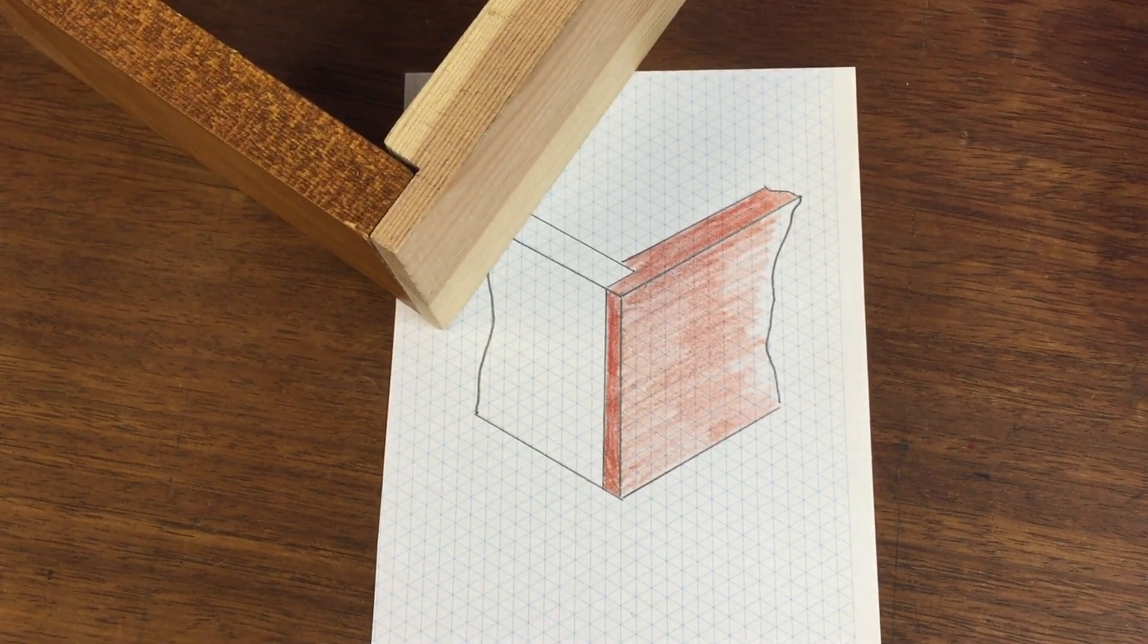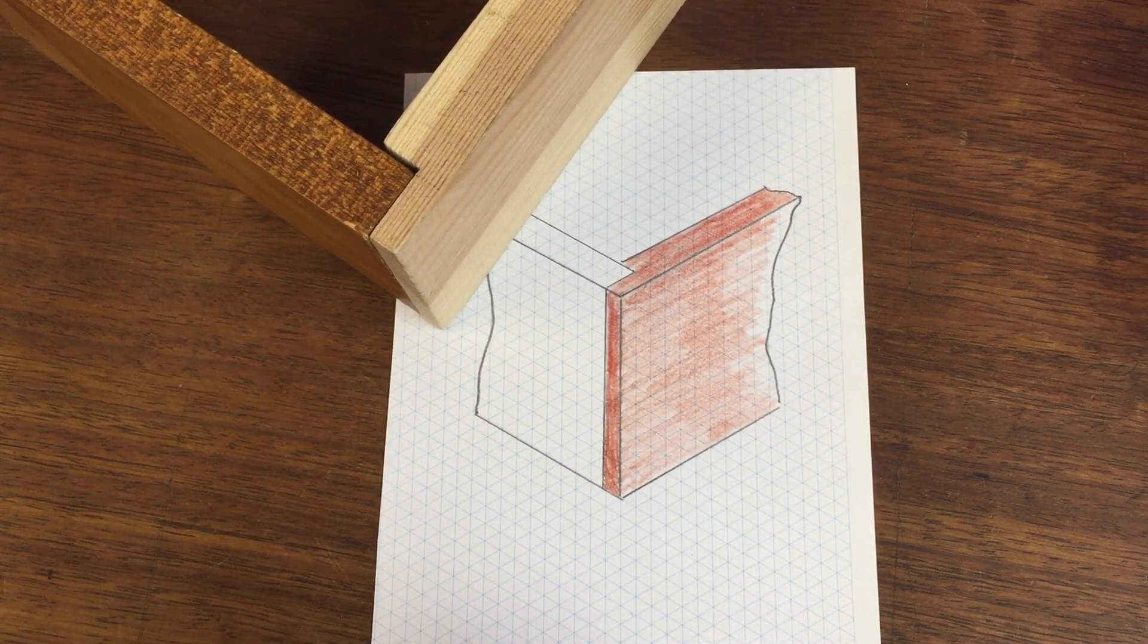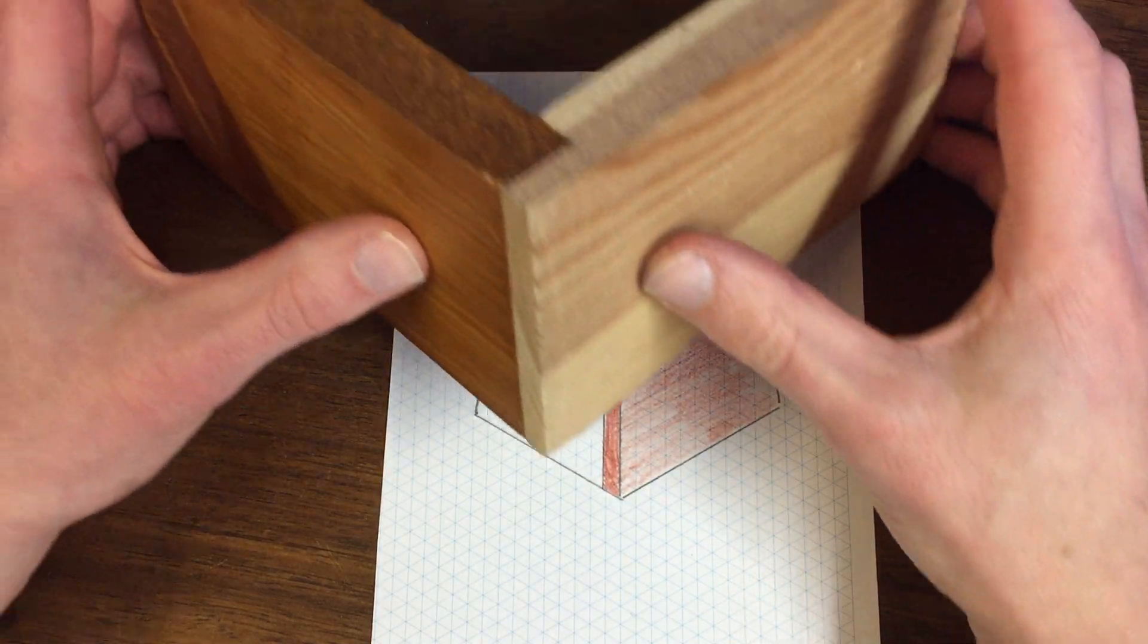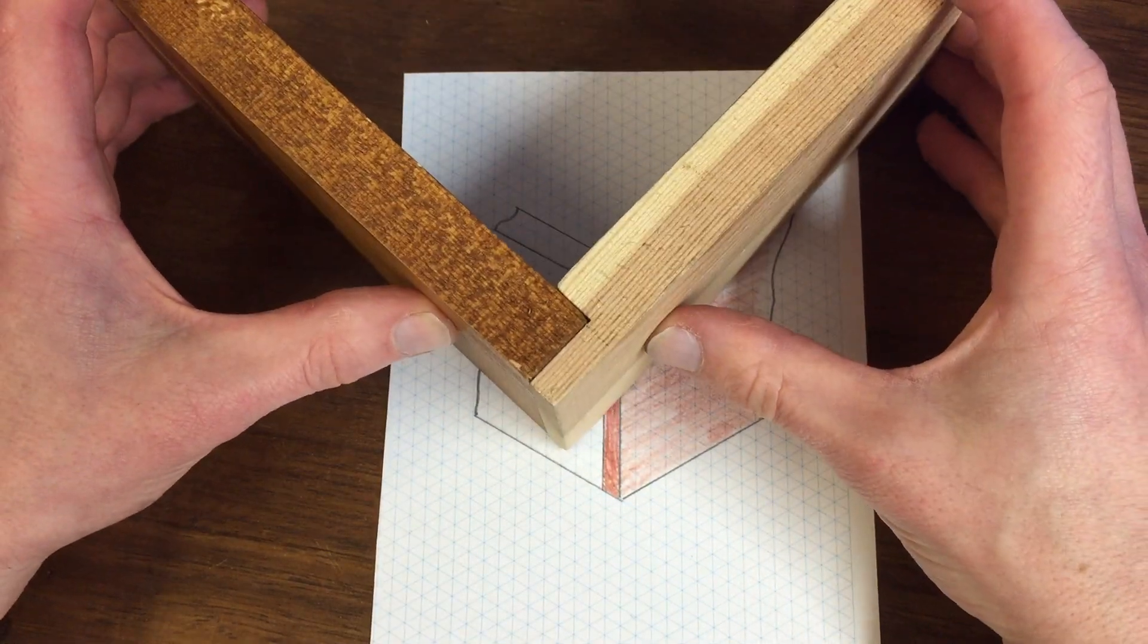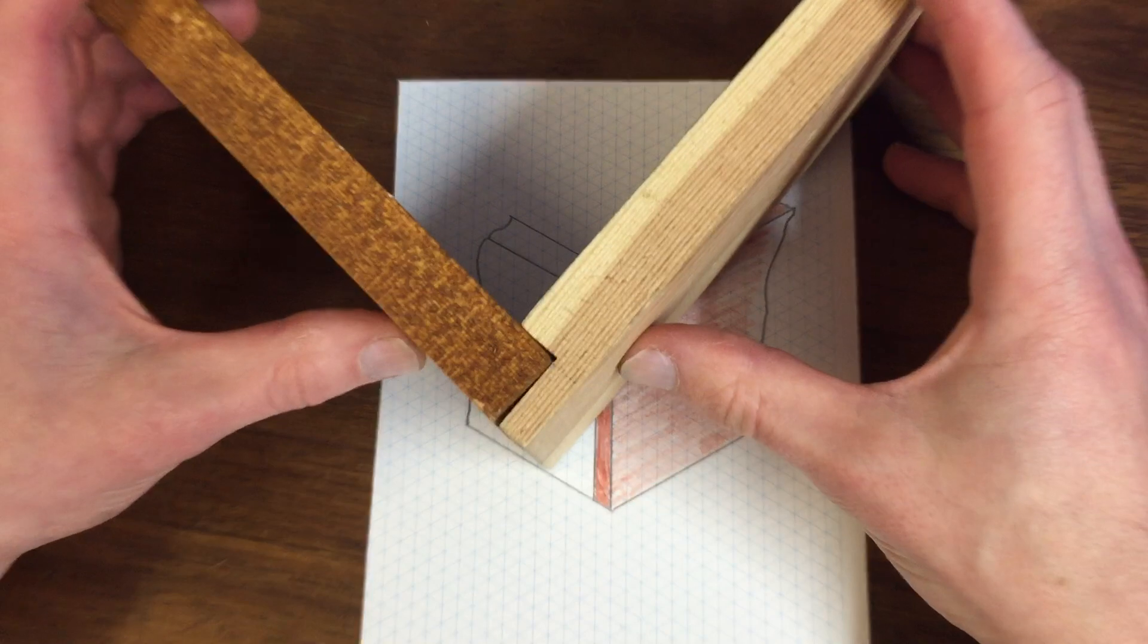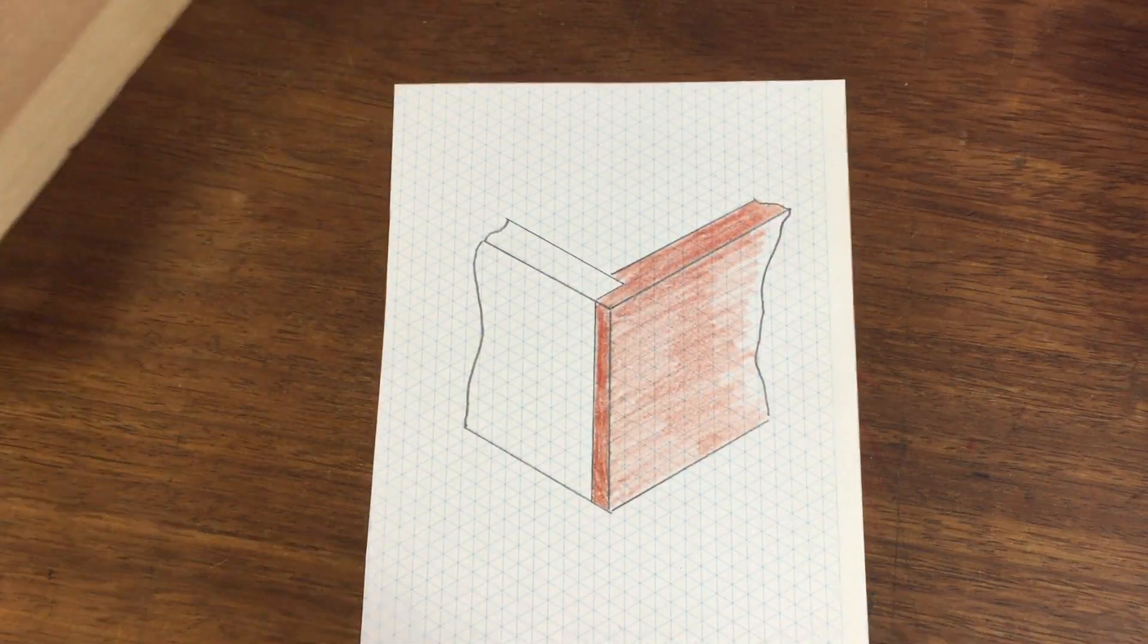Hello, in this video I'm going to show you how to do a nice isometric drawing of a lap joint, which is commonly used in the construction of drawers and sometimes boxes. You're going to use something called the isometric technique.